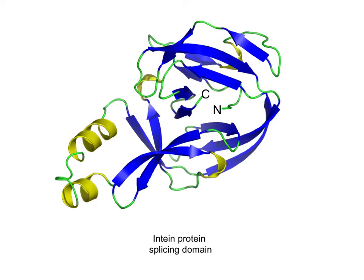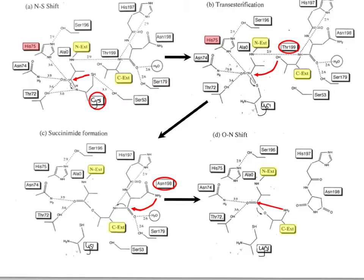Here's a structure of the intein protein splicing domain. What's interesting is that the N and C termini are close together rather than separated, allowing the two exteins attached to the N and C termini to be close together so that the reactions can proceed very rapidly in sequence. Looking at the active site in more detail, we can see that the cysteine is held by serine so it can undergo the S-to-N acyl shift.